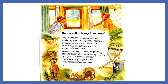Here is a child who clambers and scrambles, all by himself and gathering brambles. Here is a tramp who stands and gazes, and there is the green for stringing the daisies. Here is a cart run away in the road, lumping along with man and load. And here is a mill and there is a river — each a glimpse and gone forever.